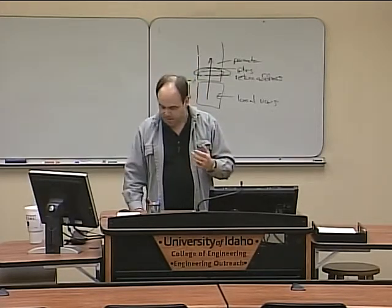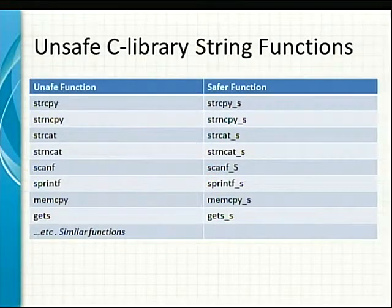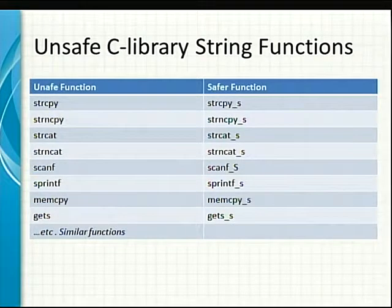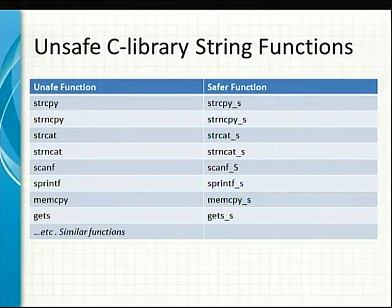How does it happen? People use unsafe library string functions. They get data from the user — it's a string of data — and they say, let's copy that user data from the input buffer, from the network, into my code. Let's use string copy. How does the string copy function work? It's a standard library function in C. You have a source buffer and a destination buffer, and it copies bytes from source to destination, continuing until it finds byte zero, which means end of string.